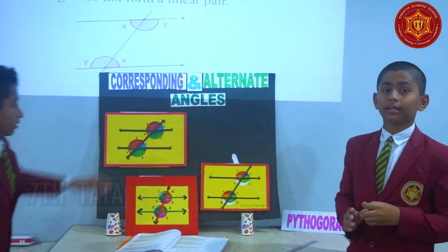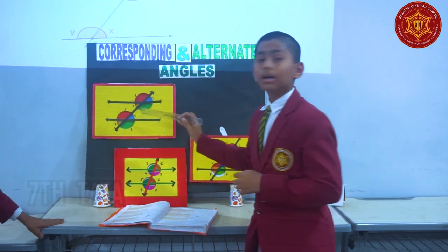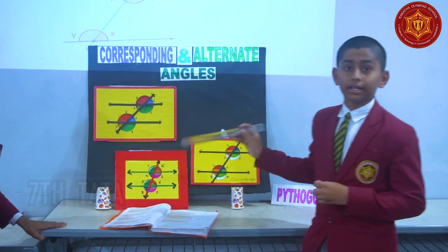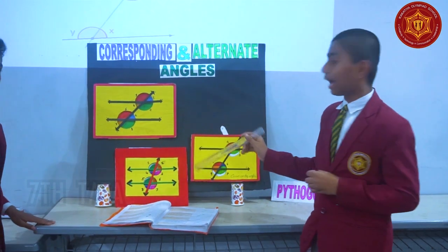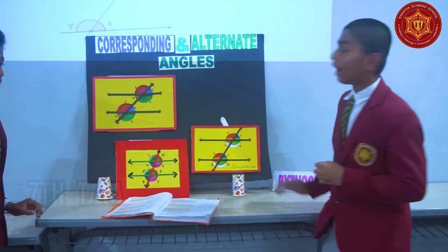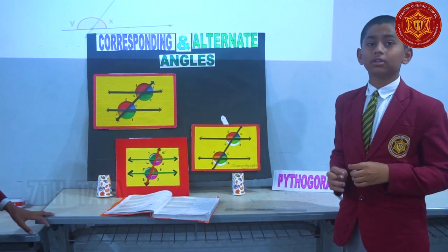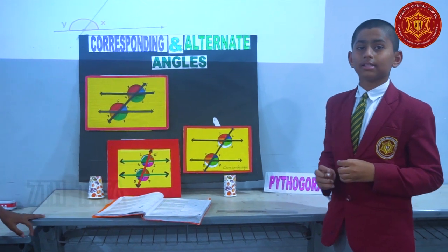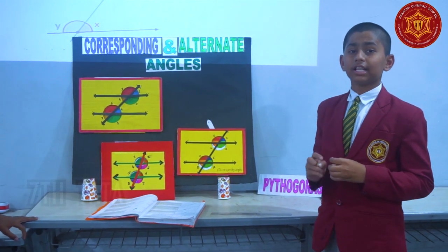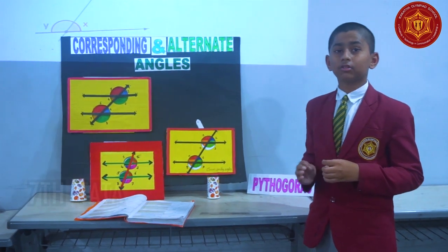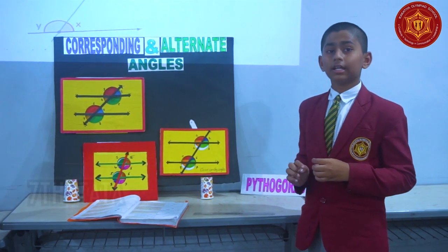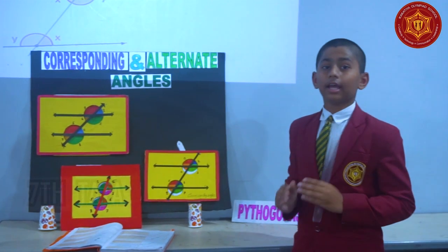Good morning, everyone. My name is Aditya. I belong to 7th grade and I belong to the Pythagoras group. A transversal is a line which intersects two or more distinct points — that line is called a transversal.